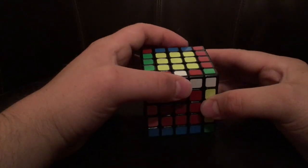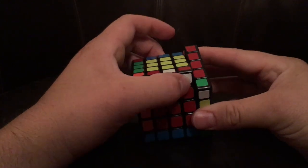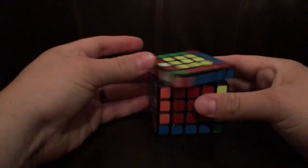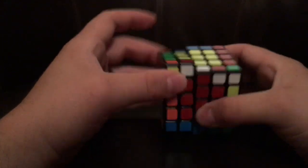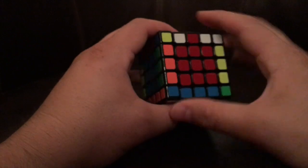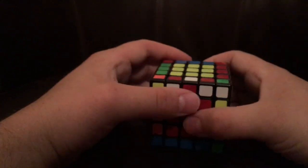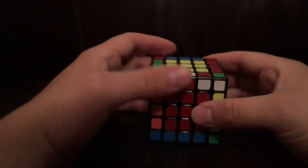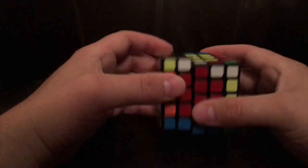Just something to keep in mind: whenever I do anything to the right here, I have an upper turn, and when I do anything with the left, I have a front-facing turn. So if you do anything to the right, just know it's always upper, and left is always front.